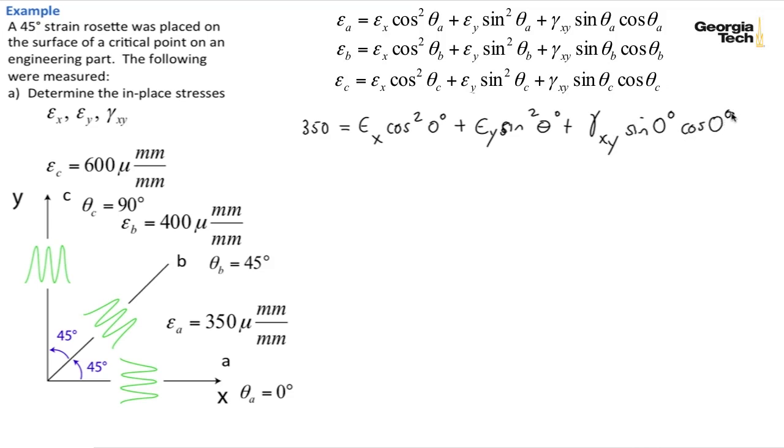And we know that cosine of 0 degrees is 1, so that squared is 1. Sine squared is 0. Sine squared of 0 degrees is 0, and sine of 0 degrees is 0. And so what we end up with is epsilon_x, the in-plane normal strain in the x direction is 350 micro millimeters per millimeter. And so that's our one answer.